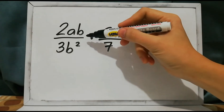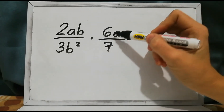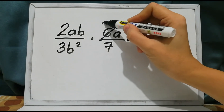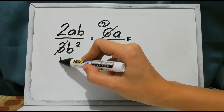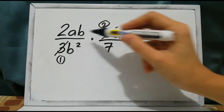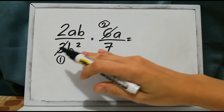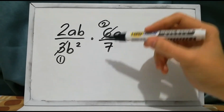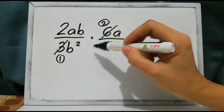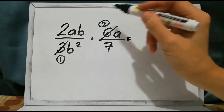Let us multiply 2ab over 3b squared, and 6a over 7. 6 and 3 have a common factor of 3: 6 divided by 3 is 2, and 3 divided by 3 is 1. For variable a, we have 2 a's in the numerator but no a in the denominator, so we move to variable b. We have b in the numerator and b squared in the denominator — their common factor is b.